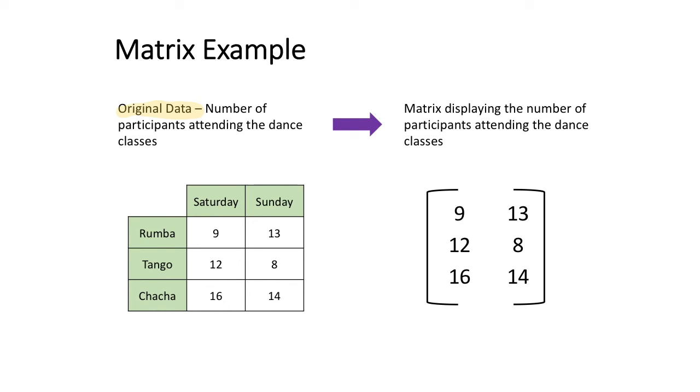You can see we've got Saturday and Sunday so the dance classes are over a weekend and we've got three types of dances: rumba, tango and cha-cha. That information can be taken from the table and then displayed into a matrix.